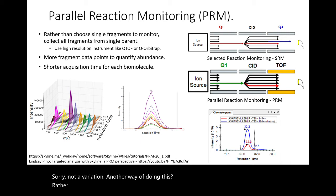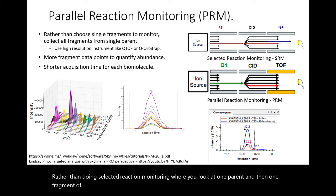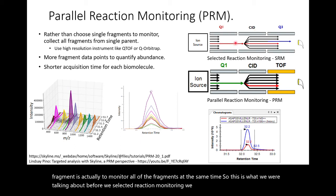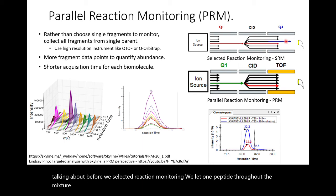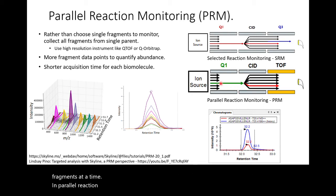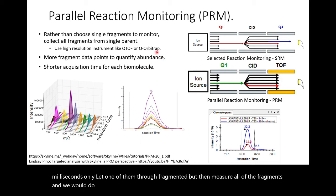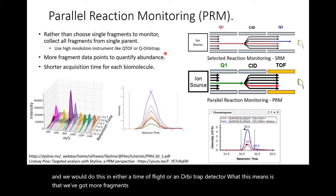Another way of doing this — rather than selected reaction monitoring where you look at one parent and then one fragment for 50 milliseconds — is to monitor all of the fragments at the same time. In selected reaction monitoring we let one peptide through, fragment it into lots of fragments, but then measure only one fragment at a time. In parallel reaction monitoring, we tell the mass spectrometer for 50 or 100 milliseconds to only let one peptide through, fragment it, but then measure all of the fragments simultaneously — in either a time-of-flight or an Orbitrap detector.